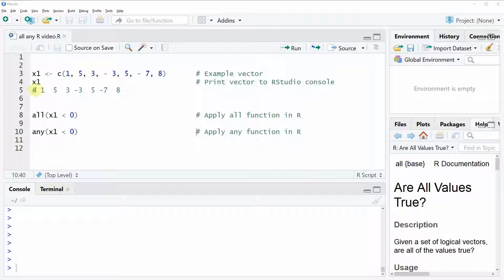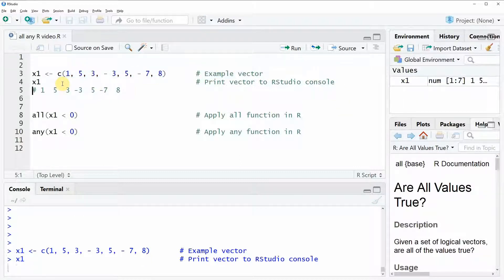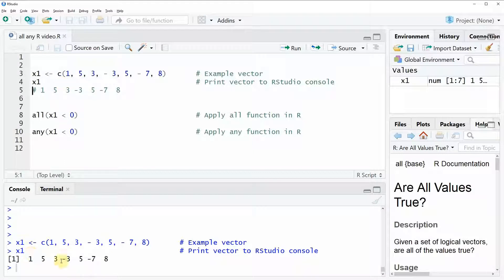In the video I'm going to use the following example data that we can create with this line of code. If you run this line of code you can see that at the top right of RStudio the value x1 appears. We can also have a look at the data and as you can see here at the bottom of the RStudio console our data contains several numeric values stored in a vector.